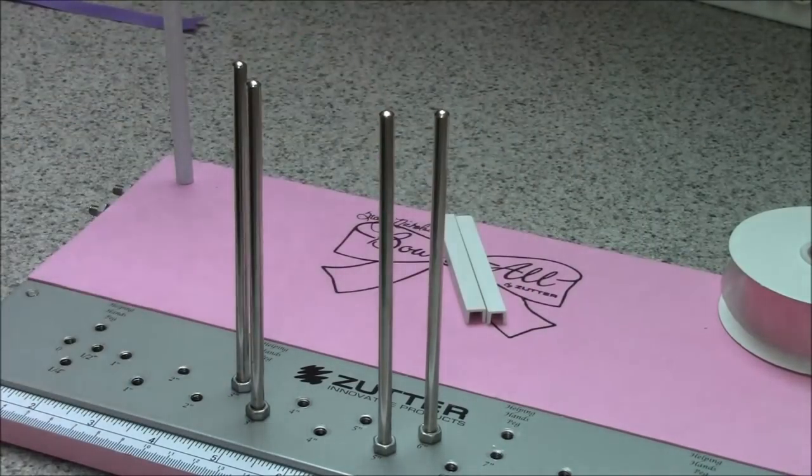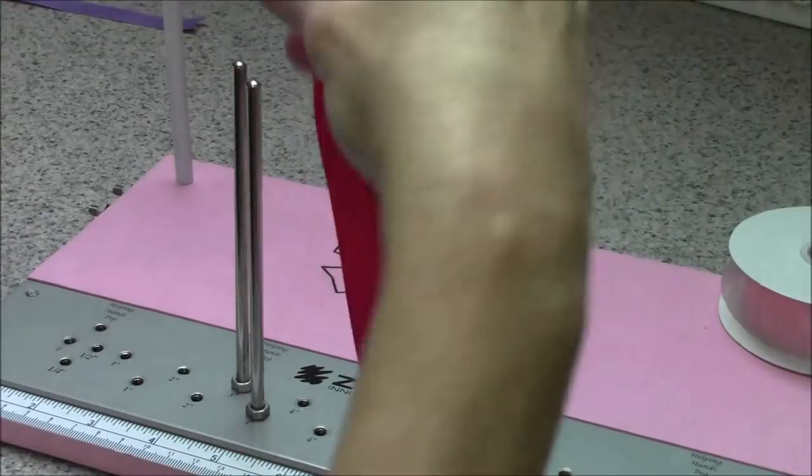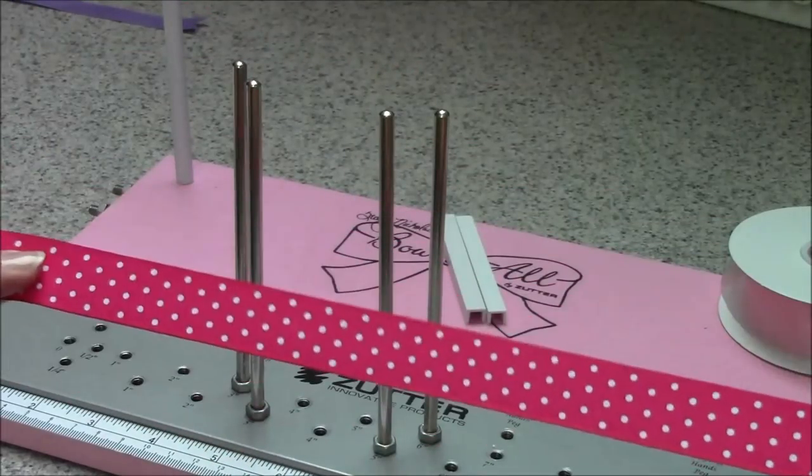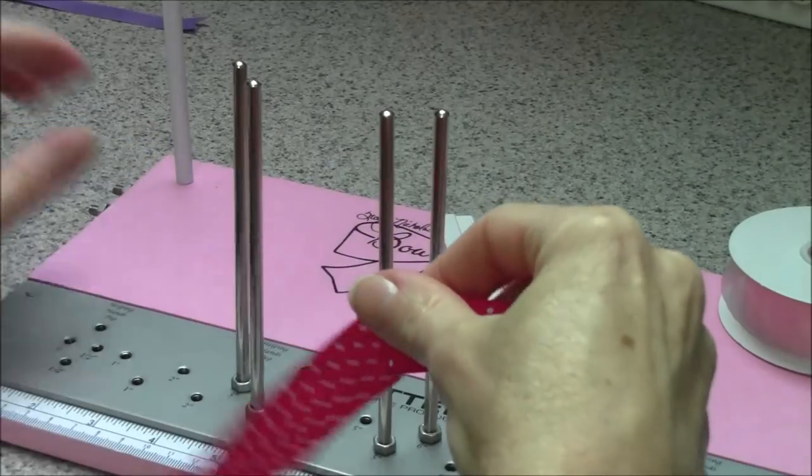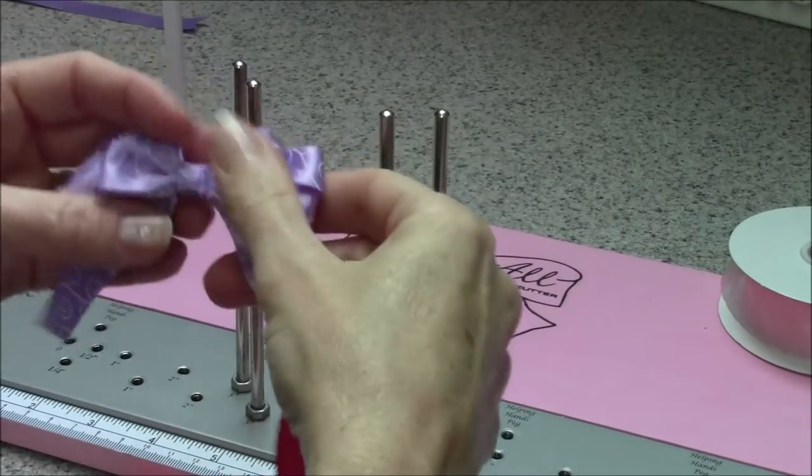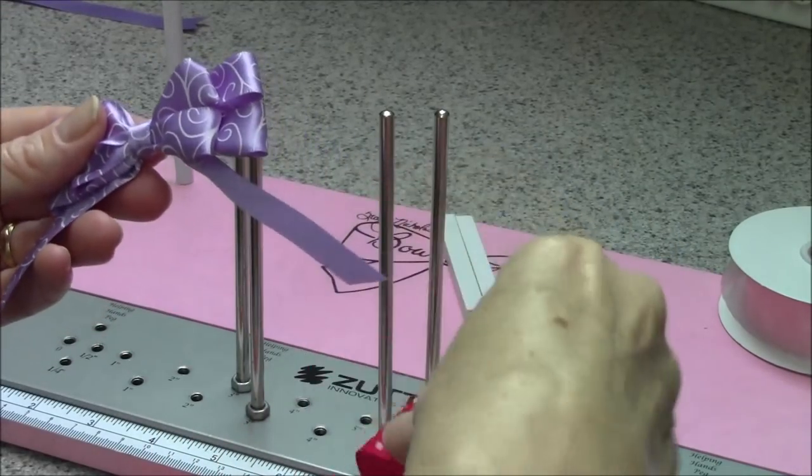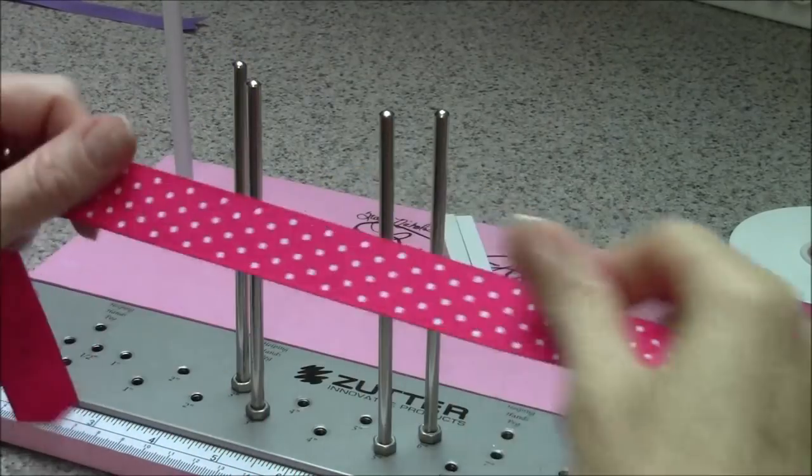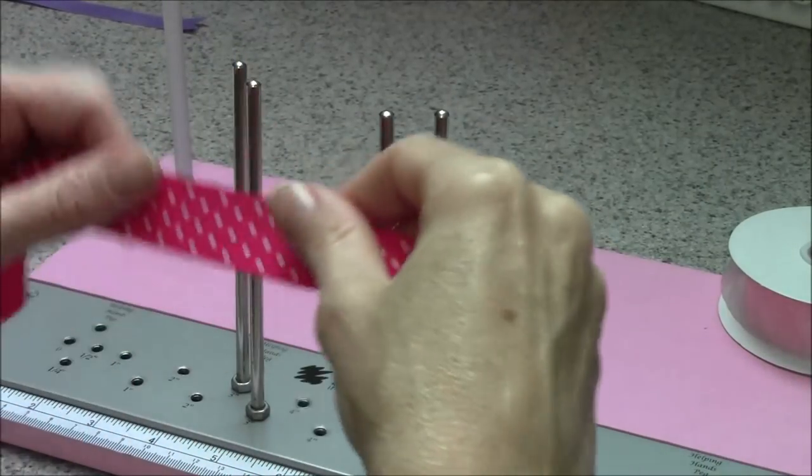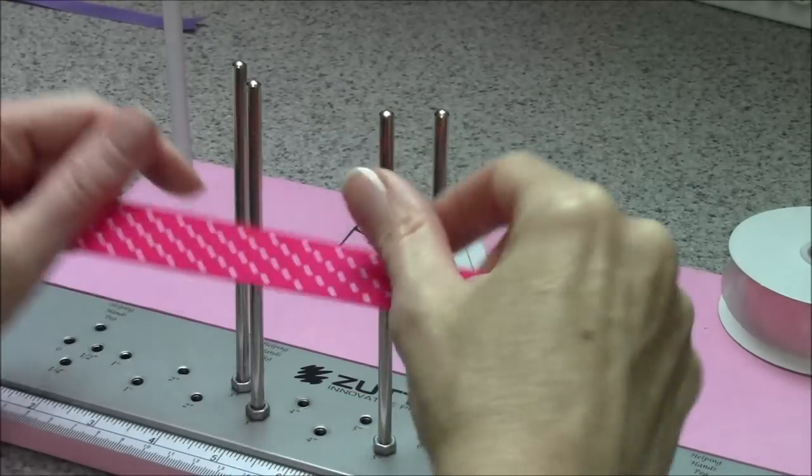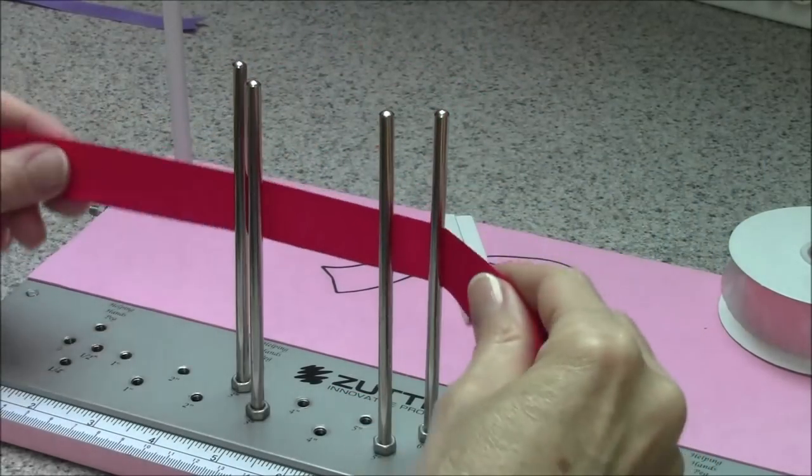Okay, next up we are going to use a 7/8 inch Swiss dot grosgrain. Now the previous bows have all been satin which is a little bit lighter weight than the grosgrain, but there's no reason to avoid using any ribbon you want. You can tie a gorgeous bow with this tool.